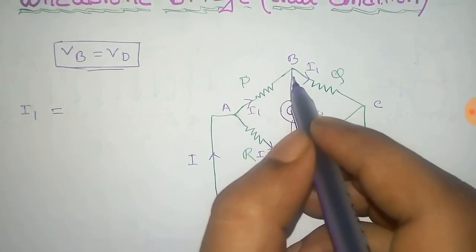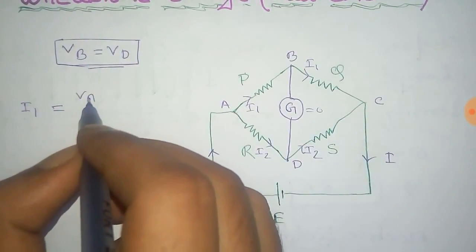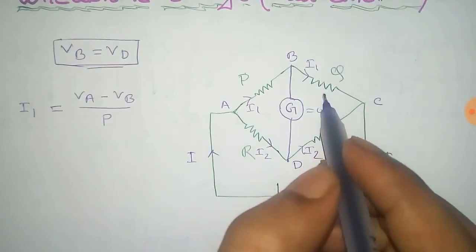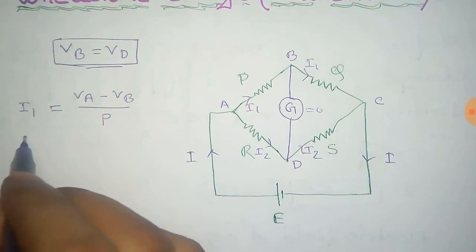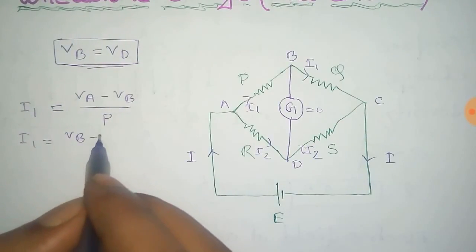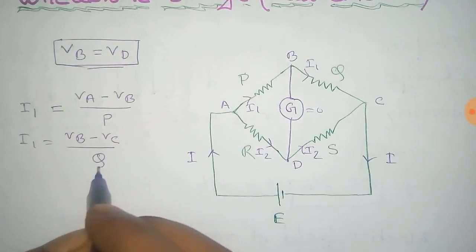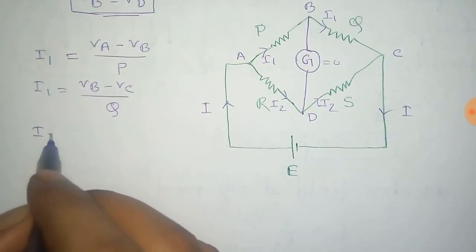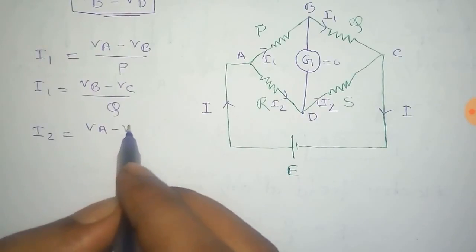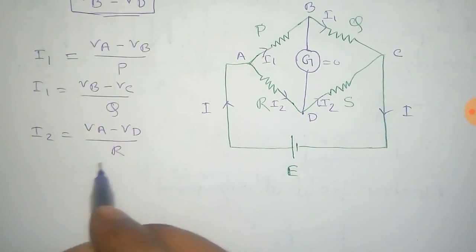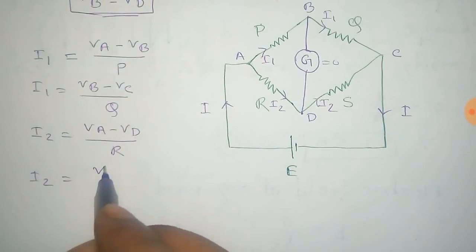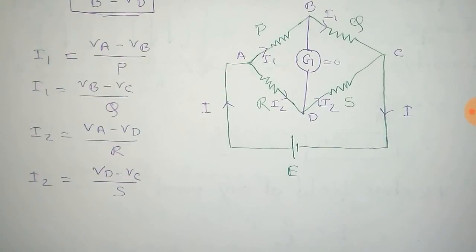So the current I1, that is equal to potential difference by resistance, that is VA minus VB by resistance P. Similarly, I1 equals VB minus VC by resistance Q. And for I2, VA minus VD by R equals VD minus VC by resistance S.